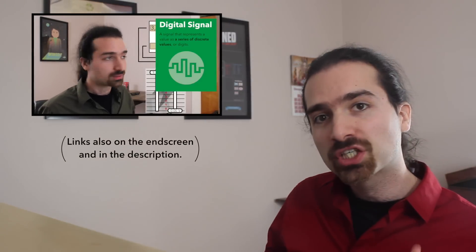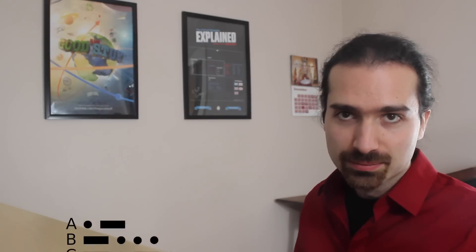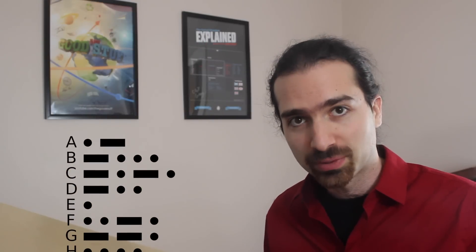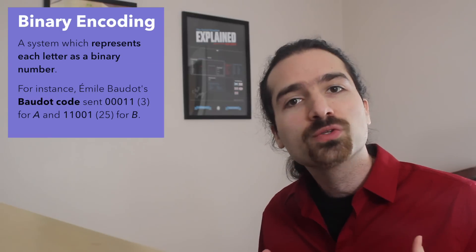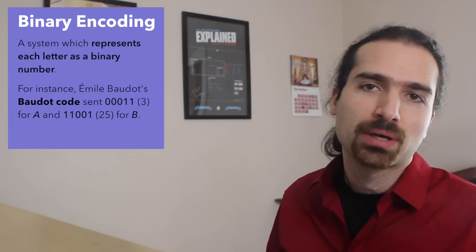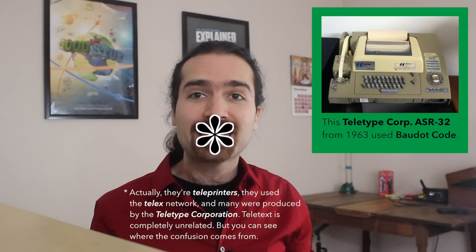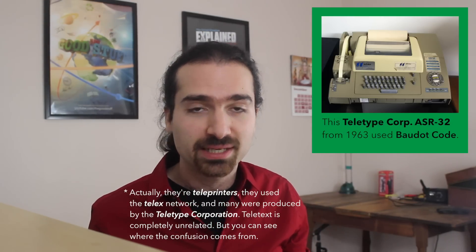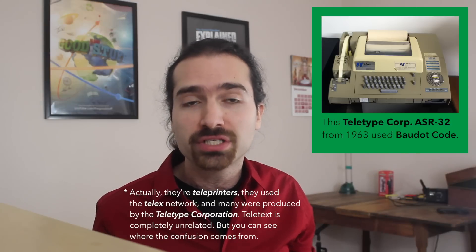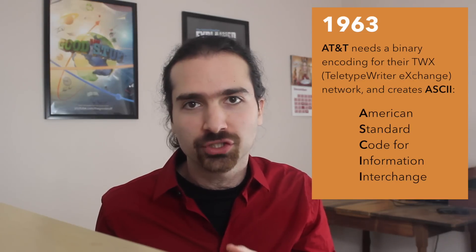Electric telegraph systems have always used digital schemes for transmitting text. That's because an analog signal, like a telephone voice connection, wouldn't carry well enough over the wires of the day. But a digital signal can be much clearer. Telegraph companies used several encoding schemes. Morse code is probably the most closely associated with the telegraph, but there are also binary codes — codes which assign each letter a series of ones and zeros to represent it.